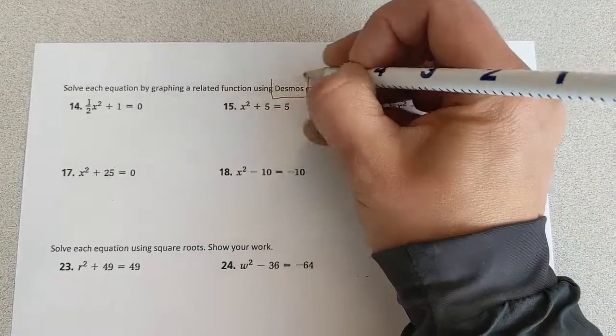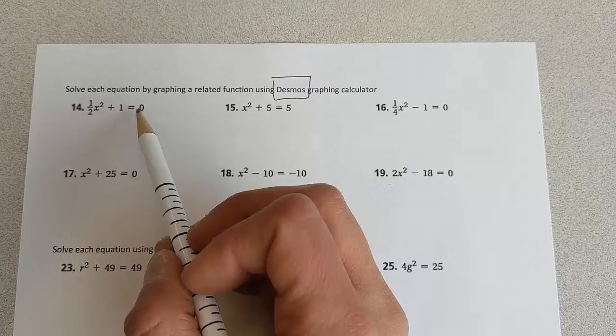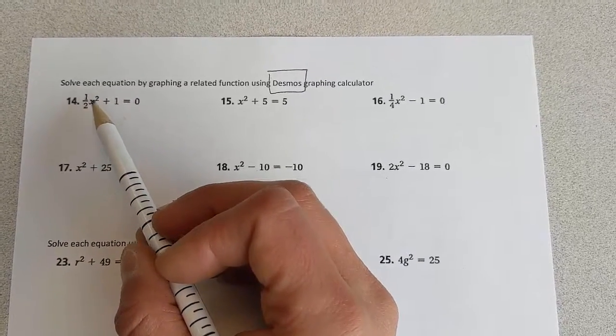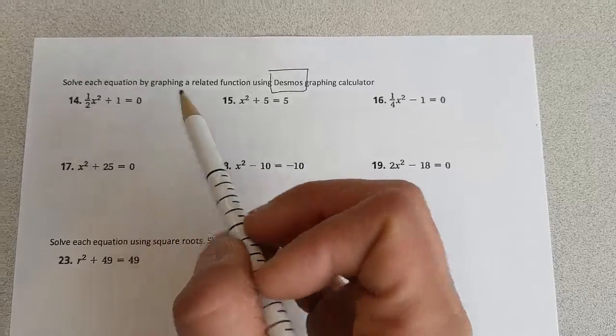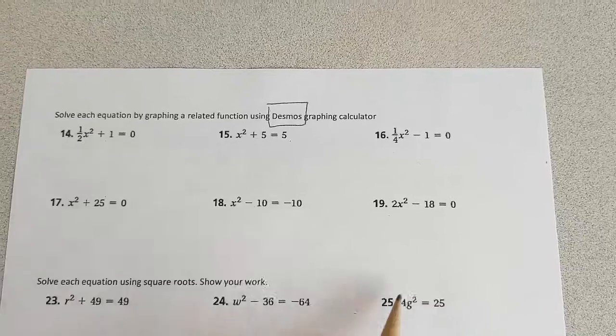You don't have to do the graphing by hand. You're going to look at Desmos, but you are going to find the solutions - the x values that make y equal 0 here, the x values that make y equal 5 here, and so on. If there's no solution, you'll write that.